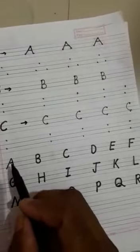A for apple. B for ball. C for kite. D for dog. E for elephant. F for fish. G for grapes. H for hand. I for ice cream. J for jug.